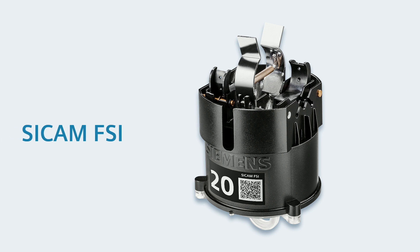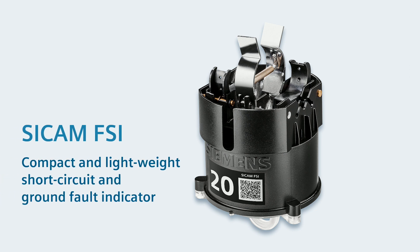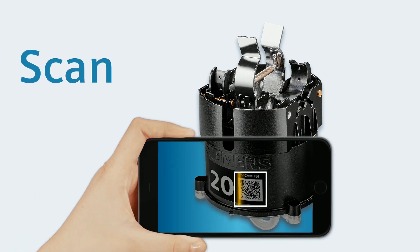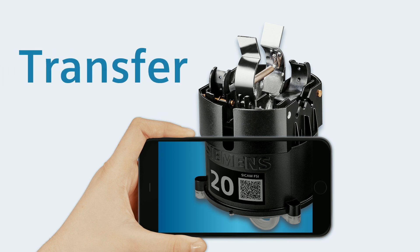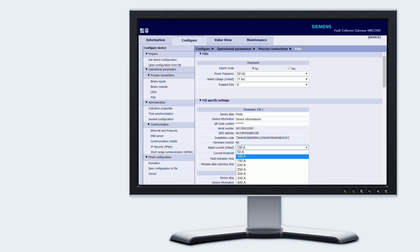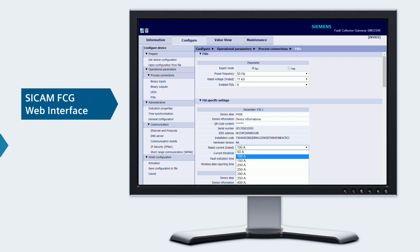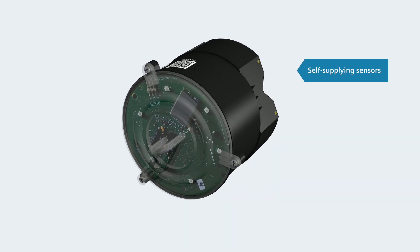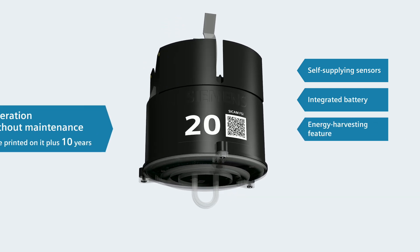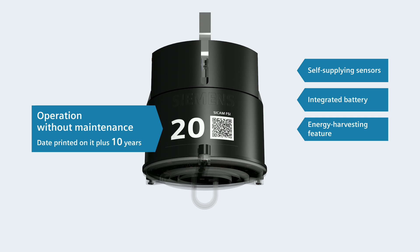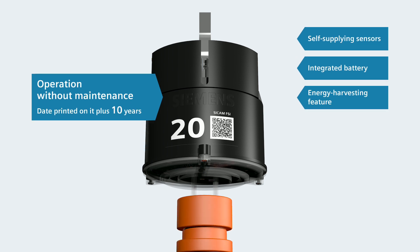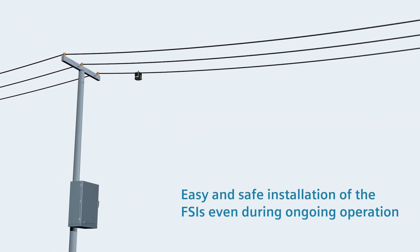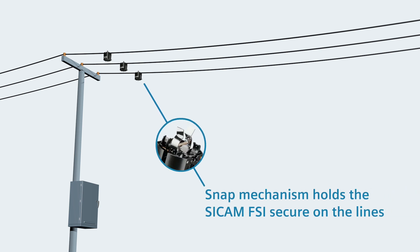With the CCAM FSI, you get a compact and lightweight short circuit and ground fault indicator. Before installation, you scan the QR code mounted on the housing. Transfer the scanned code to your PC, for example via email. Then use the CCAM FCG web interface to define the settings of the CCAM FSI with integrated communication. Thanks to the self-supplying sensors with integrated battery and energy harvesting feature, the CCAM FSI is ready for operation without further maintenance for about 10 years as of the date printed on it. Installation on the overhead line cable is done easily and safely using a hot stick with proper insulation even when the power supply is in operation. The snap mechanism on the top of the housing holds the CCAM FSI absolutely secure on the lines.